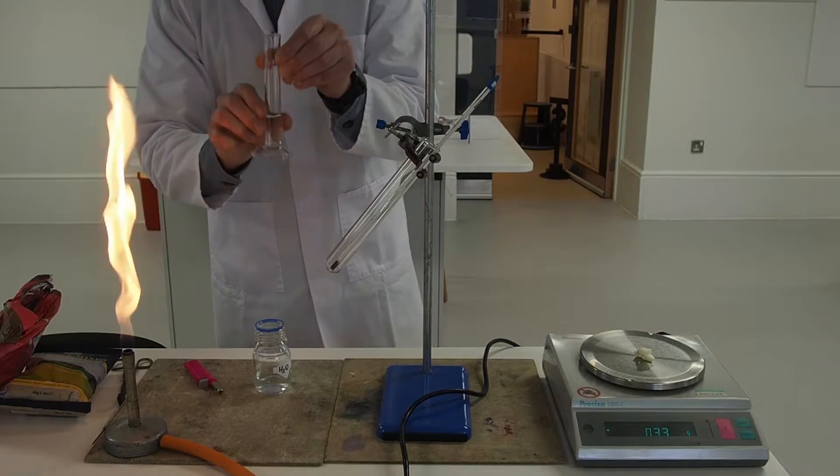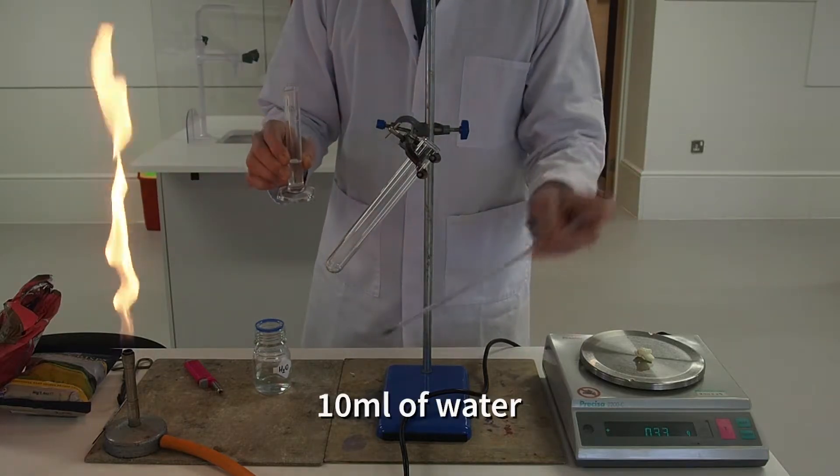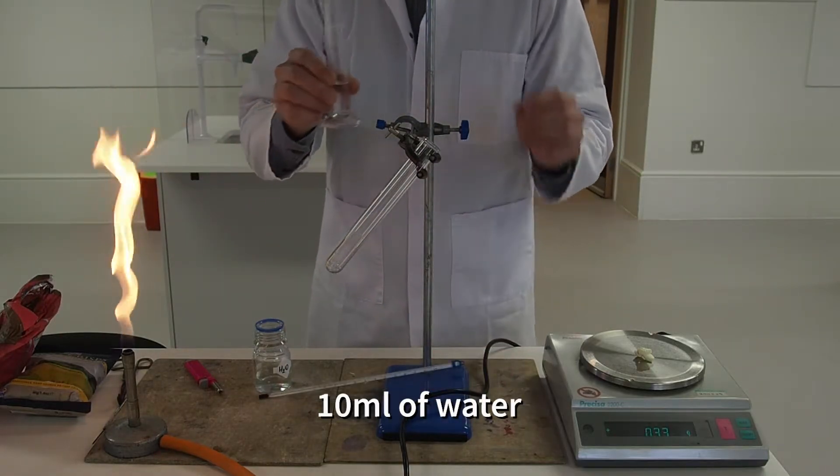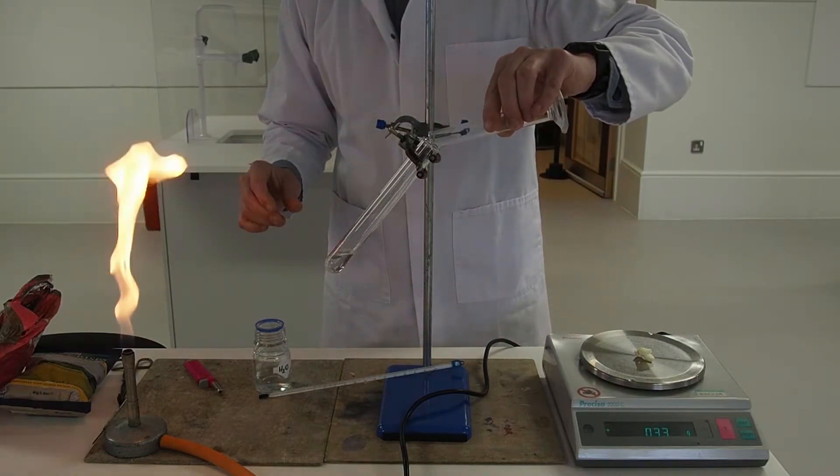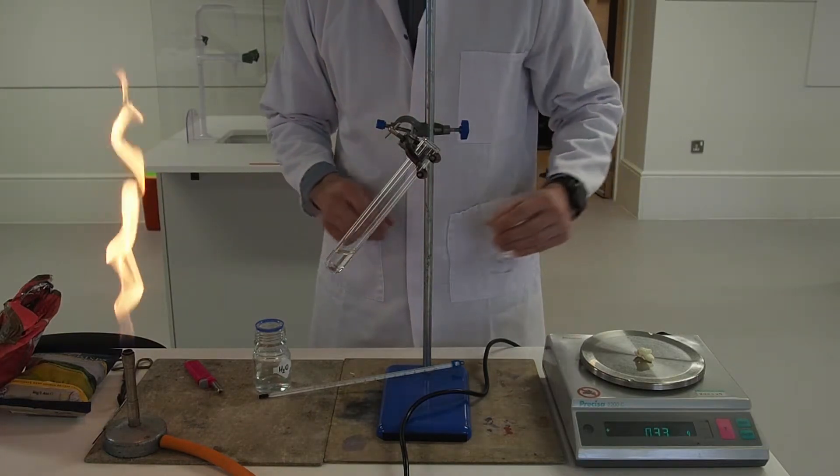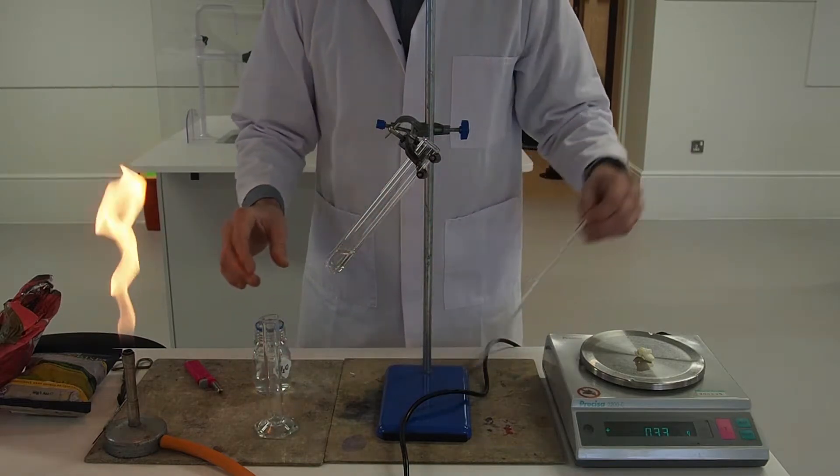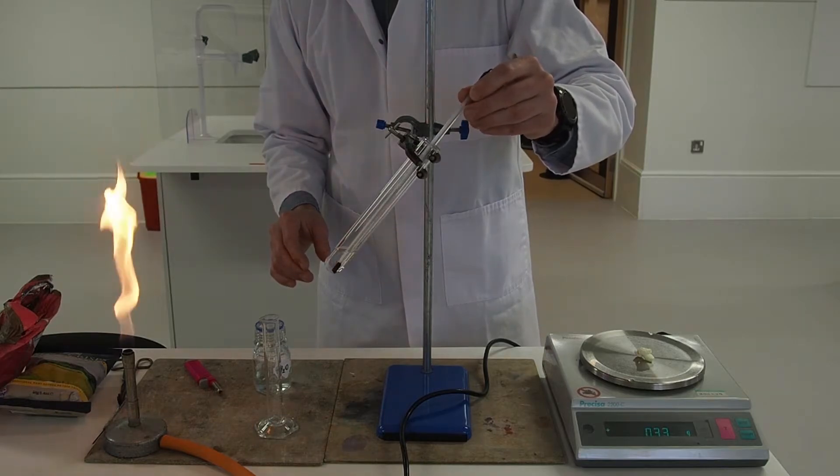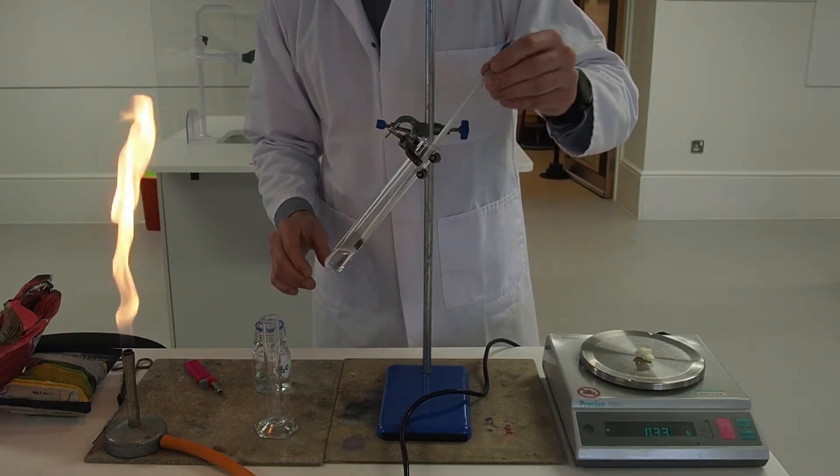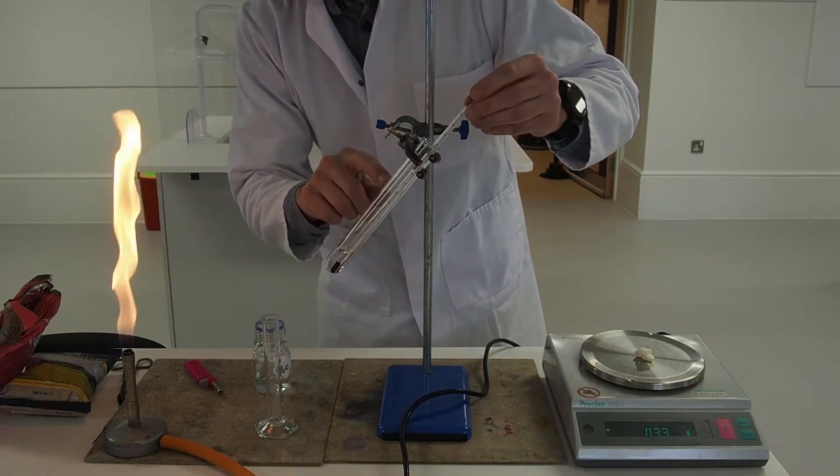First of all we need to measure out a known volume of water, in this case 10 milliliters, and add that to a boiling tube. Next we need to record the initial temperature of the water we're putting in. In this case it's 23 degrees centigrade.